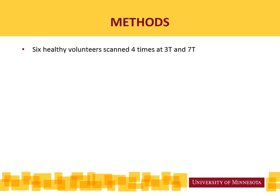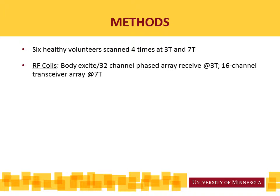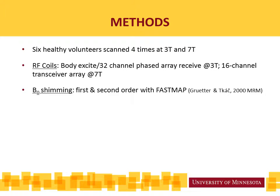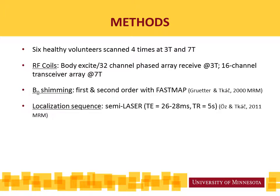A summary of our methods: we scanned six healthy volunteers four times with weekly scans at both 3 tesla and 7 tesla. The RF coils used were the best ones available to us at both fields, so they were not identical. At 3 tesla we used the standard setup with body coil excitation and 32-channel phased array receive, whereas at 7 tesla we used the 16-channel transceiver array. Shimming was the same on both fields.